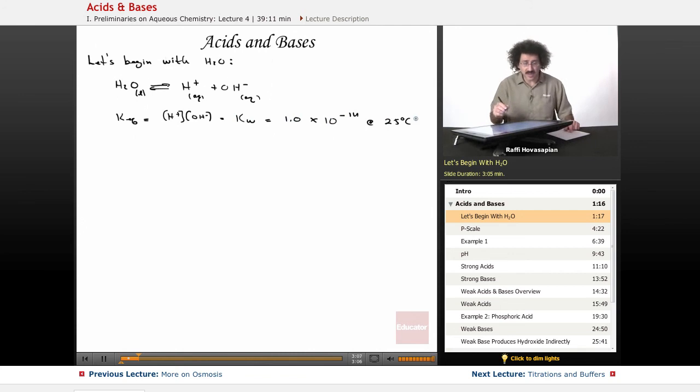At 25 degrees Celsius, this ion product constant, this dissociation constant for water, happens to be 1.0 times 10 to the negative 14. That's a very small number. What that's telling you is that most of it stays as water, but a little bit of it, very, very little, dissociates into that. This is a very important relation.